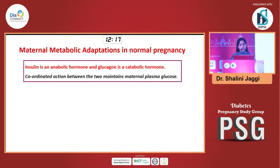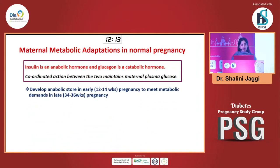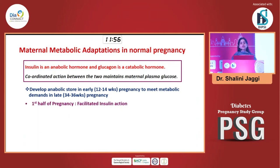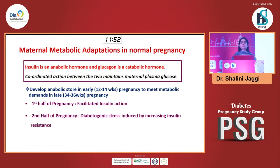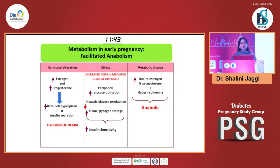What are the maternal metabolic adaptations that occur in a normal pregnancy? The idea is that you need to develop anabolic stores in early pregnancy — from 12 to 14 weeks — to maintain metabolic demands in late pregnancy at 34 to 36 weeks. In the first half of pregnancy there is facilitated insulin action, and in the second half of pregnancy all these placental hormones create a state of insulin resistance, producing a state of diabetogenic stress which worsens hyperglycemia. In early pregnancy, in a normal pregnancy, you will actually see an improvement in insulin sensitivity. As a result, the metabolic change is basically facilitated anabolism to store fuels for the baby.